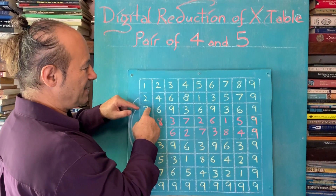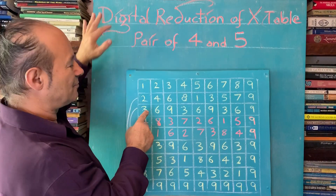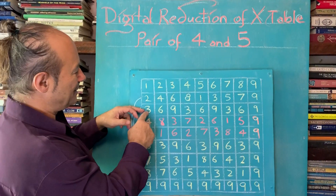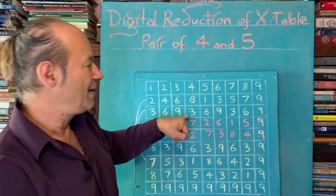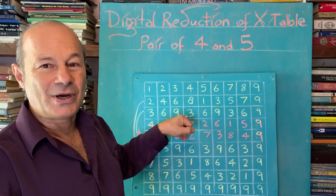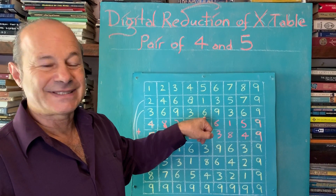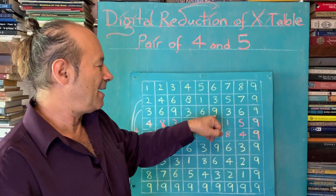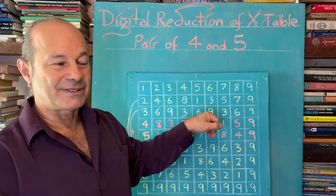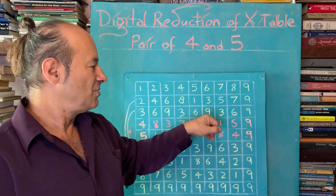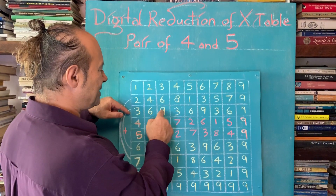Another way of doing digital reduction — also called digital compression or digital roots — is to look at the three times table: three, six, nine, twelve. When we get to twelve we just add the digits, so one and two makes three. Fifteen becomes one plus five, which is six. Eighteen becomes one plus eight, which is nine. This shortcut — just adding the digits — is one of the 16 Vedic sutras, called digit sums. Notice the repetition: three, six, nine, three, six, nine.